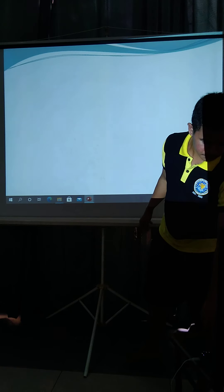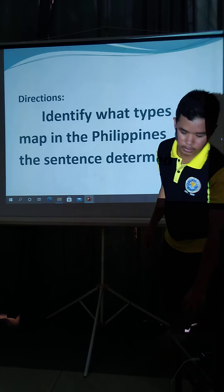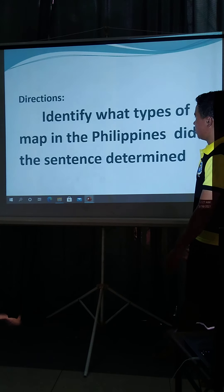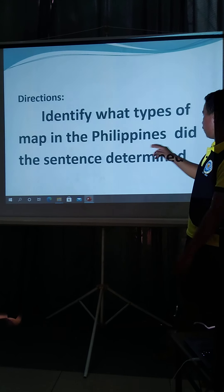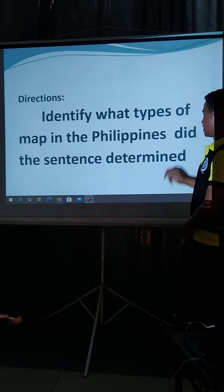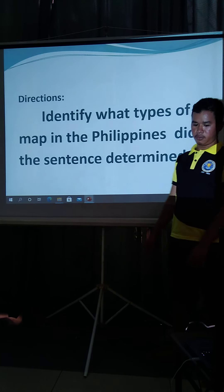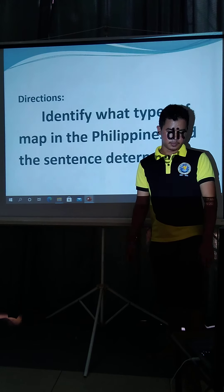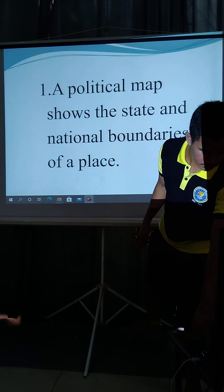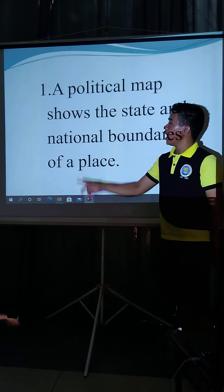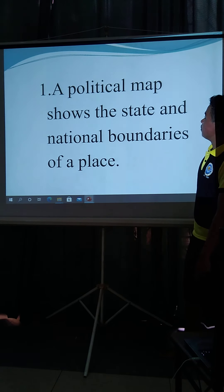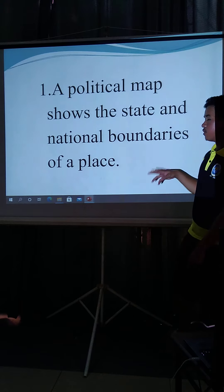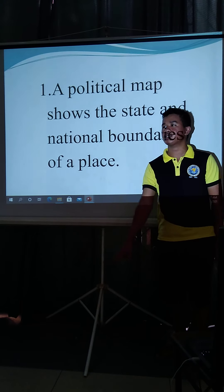Alright class, I have a short activity for you. Direction: identify what type of map in the Philippines is described in each sentence. First: a political map shows the state and national boundaries of a place.